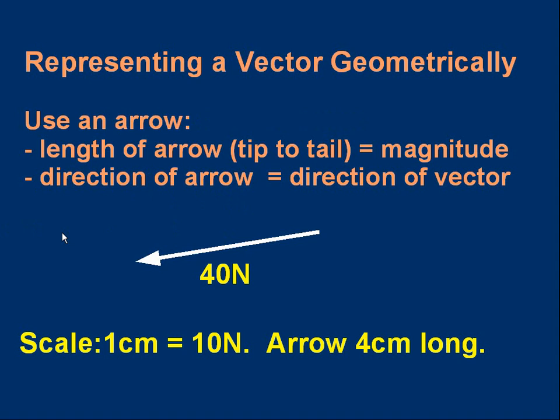We often want to represent a vector by a drawing geometrically, and we use arrows to represent vectors. If we use an arrow, the length of the arrow, that's from the tip which is the pointy bit to the tail, the other end, the length corresponds to the magnitude of the vector. And the direction of the arrow corresponds to the direction of the vector, obviously.